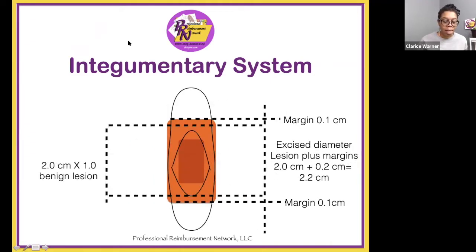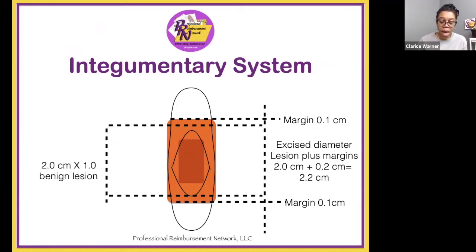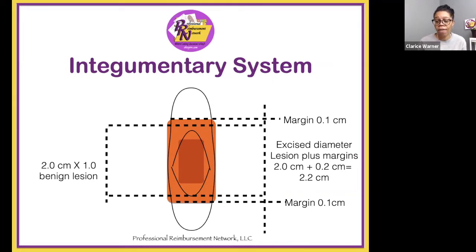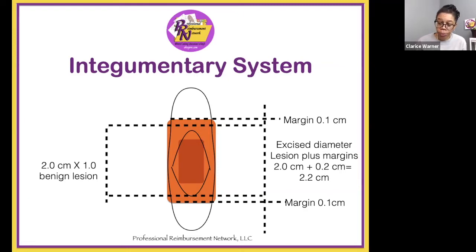Next is an example of a benign lesion of the scalp that measures 2.0 centimeters by 1.0 centimeters. The margins are 0.1 centimeters each. The total excised diameter is 2.2 centimeters. You have the lesion at 2.0 centimeters, plus 0.2 centimeters for the margins, which gives you 2.2 centimeters.